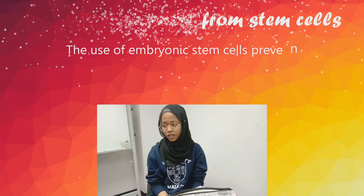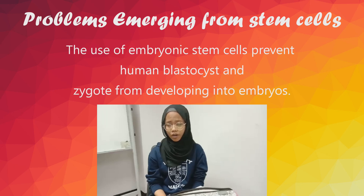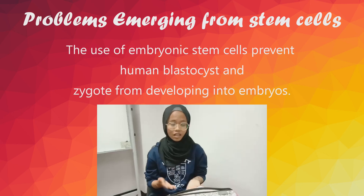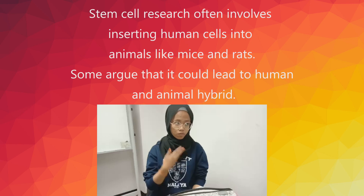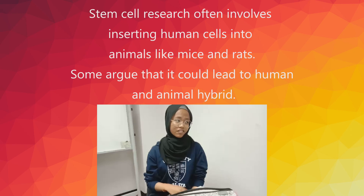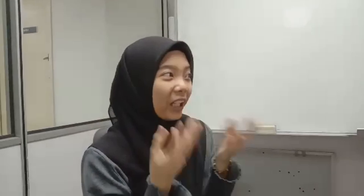There is an argument against the use of embryos in stem cell research, as it would destroy human blastocysts, and a fertilized egg can develop into a human. Another issue involves the hybrid of humans and animals — stem cell research involves inserting human cells into animals such as mice and rats, and some argue this could lead to the creation of a mixed organism.